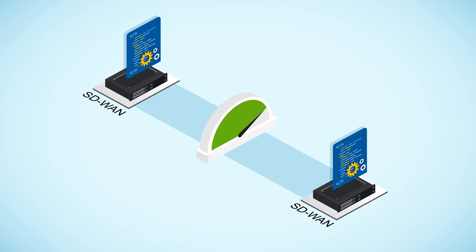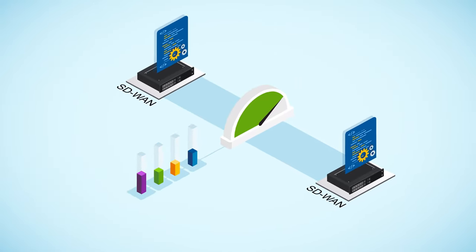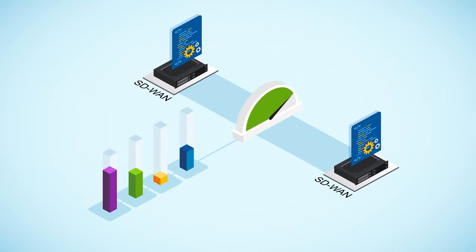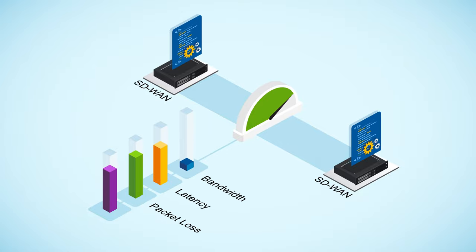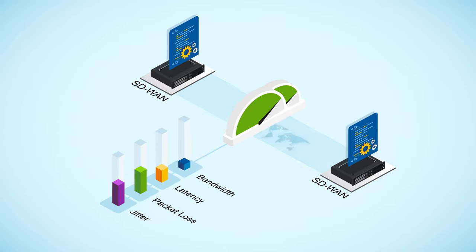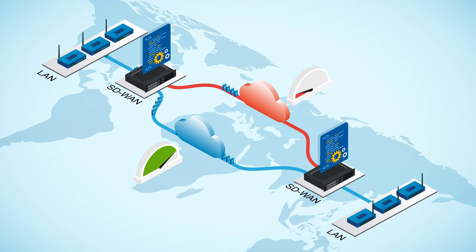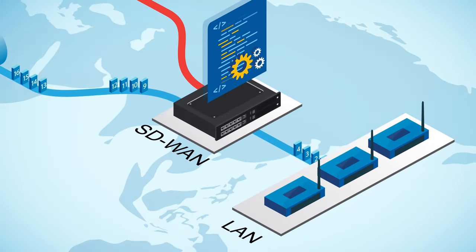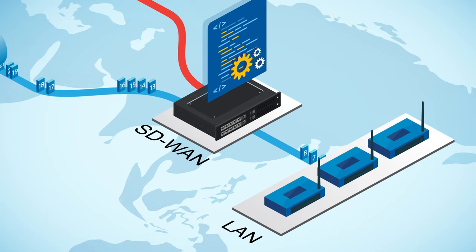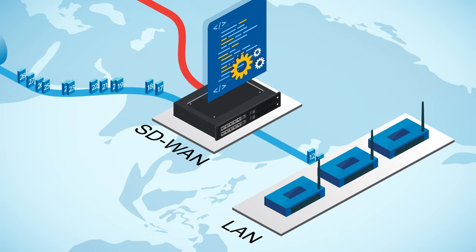SD-WAN peers also cooperate to continuously measure the performance of each transport network, estimating available bandwidth, latency, packet loss, and jitter. These estimates influence how the peers choose to steer traffic flows. For example, a transport network with significant or even total packet loss may be avoided entirely. Peers may also use these estimates to trigger mitigation techniques, such as dynamic jitter buffering.